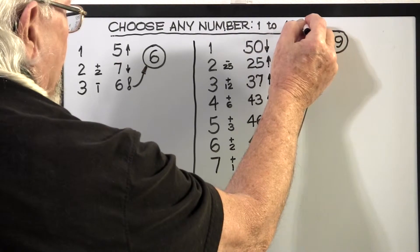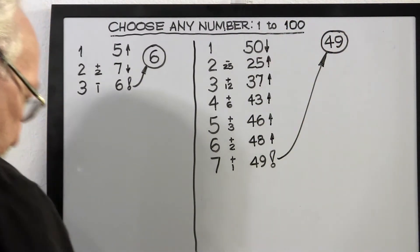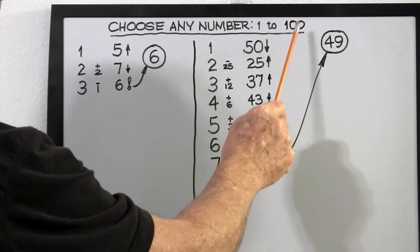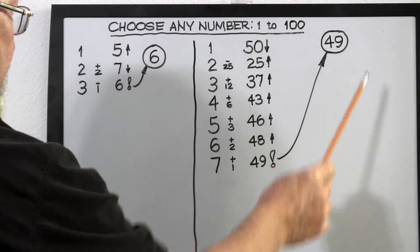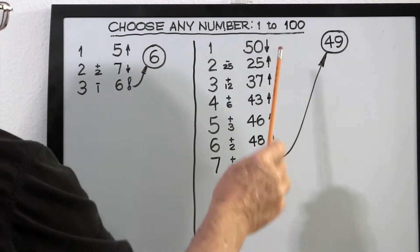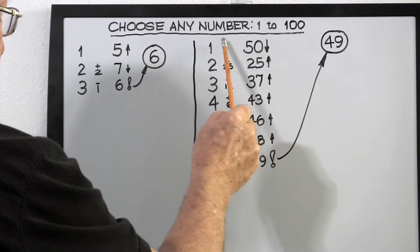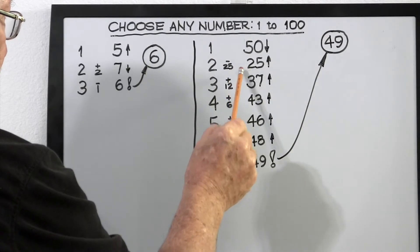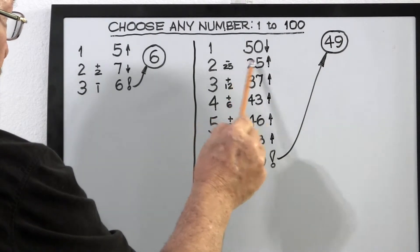Now let's try a little more complicated problem. We'll try 1 to 100, and for this example we're using this side of the board. They choose a number, and we'll assume they're going to choose the number 49. Halfway from 1 to 100 is 50, so that's your first choice, 50.